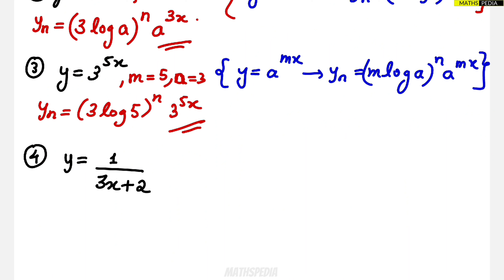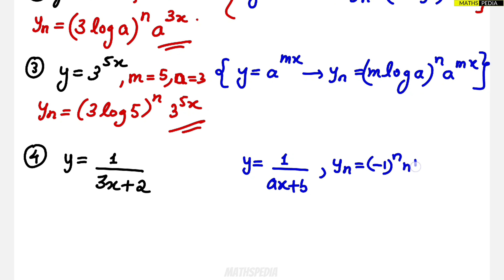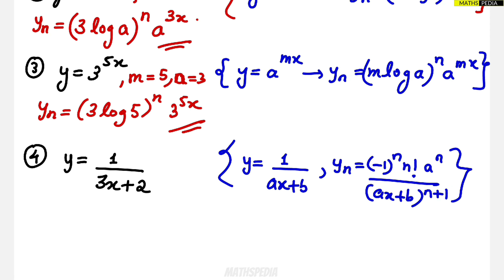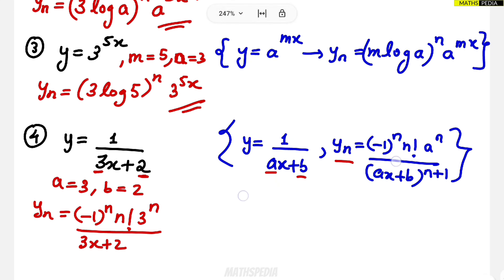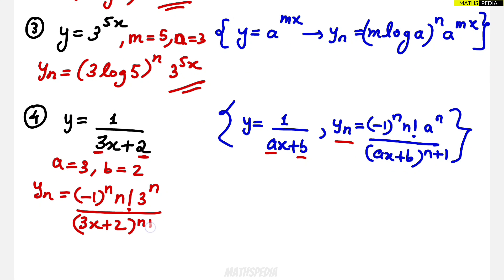The fourth question has a rational function: y = 1/(3x+2). We relate this to the formula y = 1/(ax+b), where the nth derivative is (-1)^n · n! · a^n / (ax+b)^(n+1). Here a = 3 and b = 2. Substituting, the nth derivative is (-1)^n · n! · 3^n / (3x+2)^(n+1). This is the final answer.